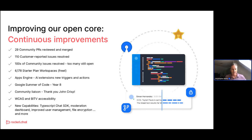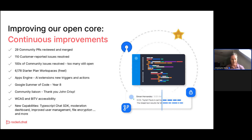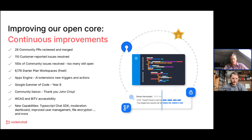As a commercial open source software company, we have a dual responsibility: being stewards of the open source project and community, and stewards of the commercial entity that funds our work. As we plan each year, we make sure we can thrive commercially to properly fund the project while ensuring our community continues to grow.